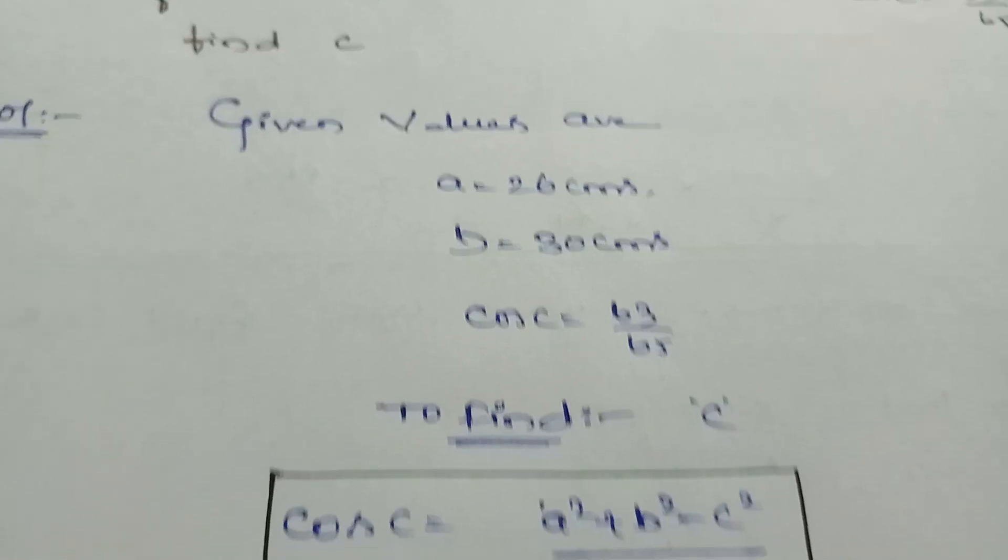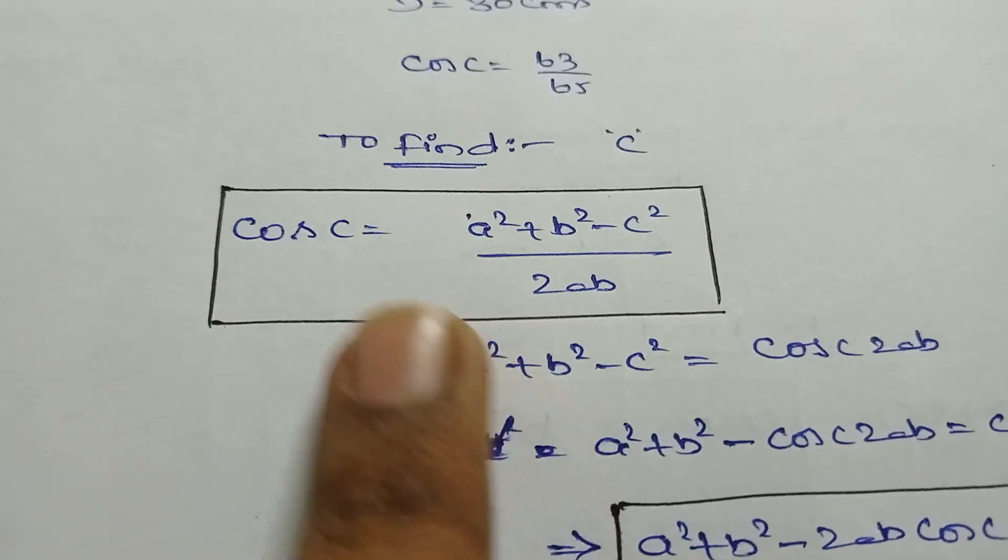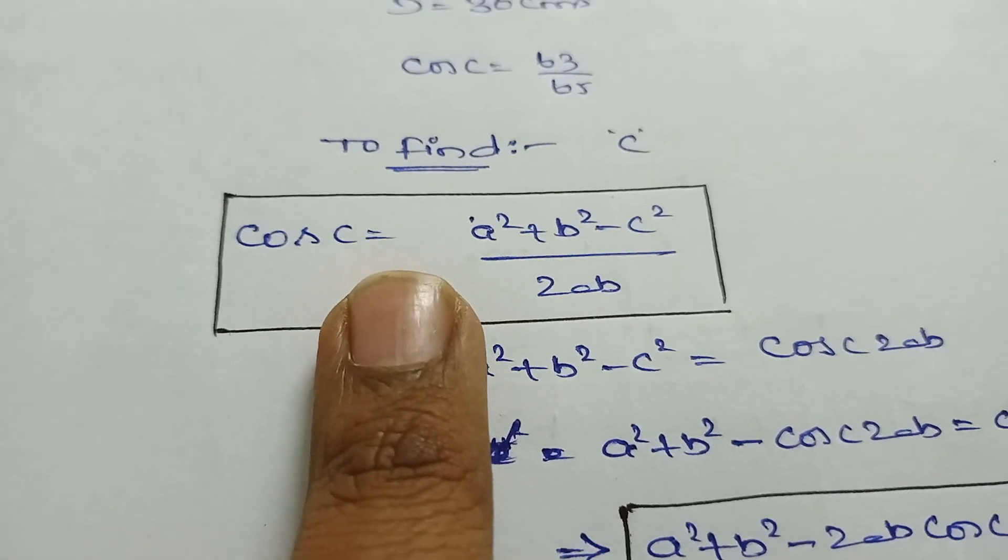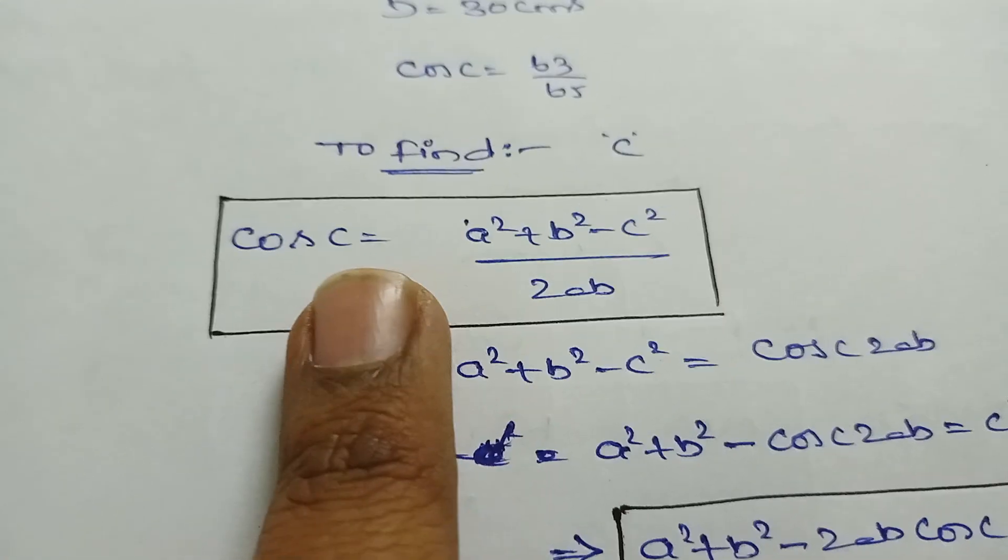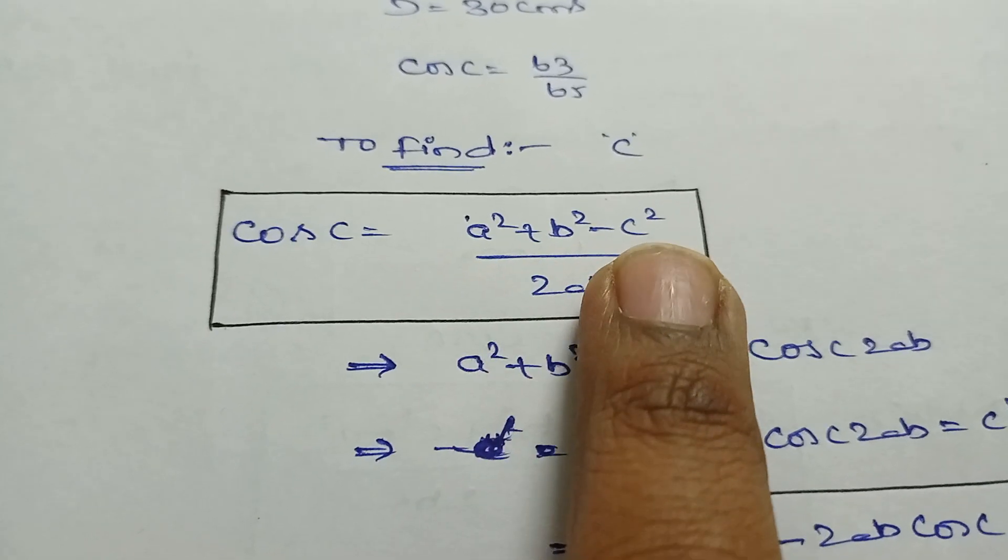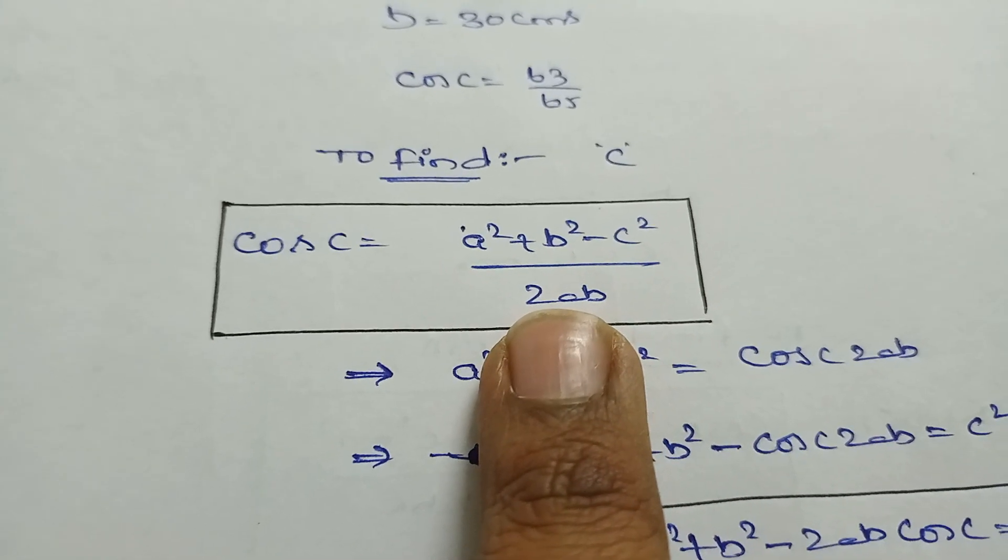First, write down the formula. From cos C we can solve this sum. Cos C = (a² + b² - c²) / 2ab. I mentioned this formula in the previous video.